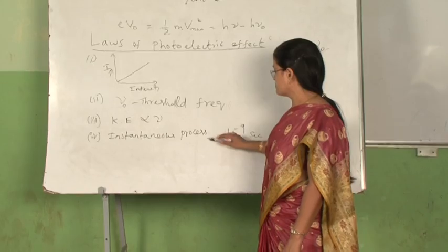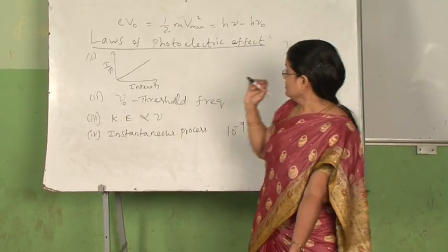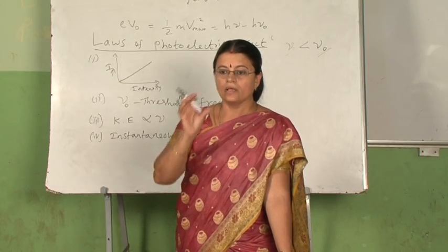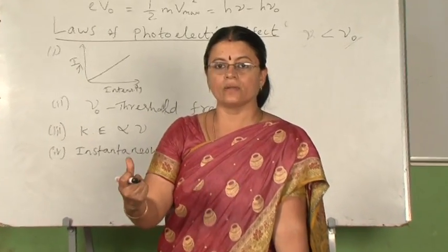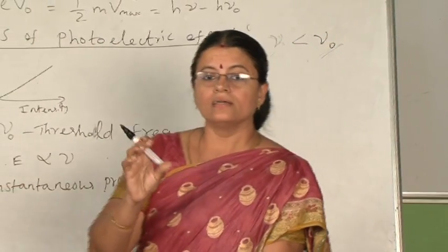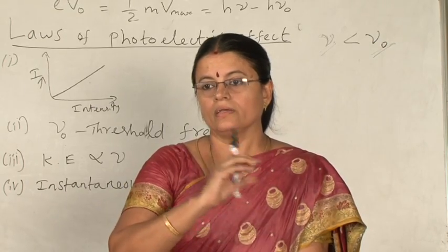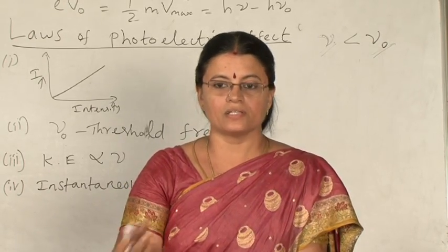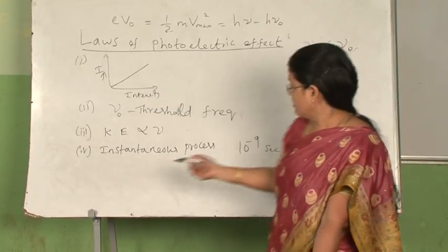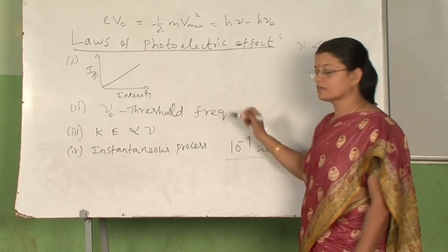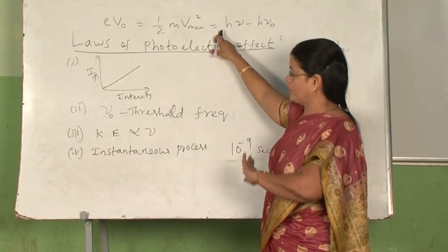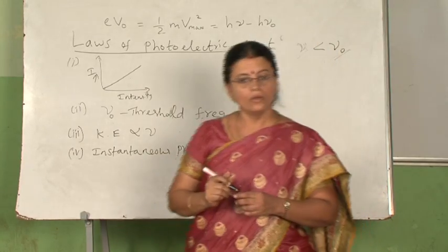To explain the instantaneous process: the interaction between the incident photons and the atoms in the metal surface is a one-to-one event. If one photon falls, one electron gains energy and comes out with some kinetic energy. It is a single event conceived as an elastic collision, so the energy transfer is almost instantaneous. There is no time lag between incidence of photons and emission of photoelectrons; the time lag is only 10⁻⁹ seconds. We conclude that photoelectric effect is an instantaneous process. Based on Einstein's photoelectric equation, we can easily explain all four laws of photoelectric effect.